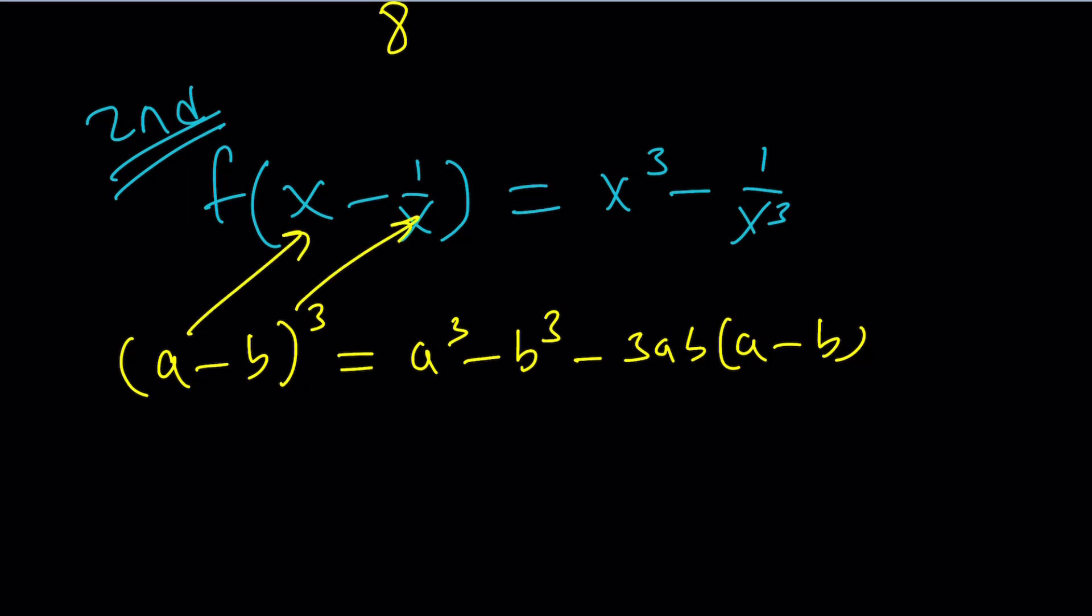This is my a. That's my b. So, f of x minus 1 over x. So, I'm probably going to do this. I will write it as a cube first. So, like this. Okay. I'm going to cube it. It's going to be x cubed minus 1 over x cubed.